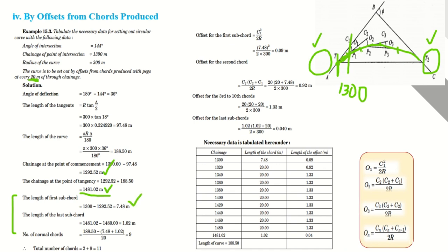Continuing at 20-meter intervals: 1300, 1320, 1340, 1360, 1380, 1400, 1420, 1440, 1460, 1480. The chainage of T2 is 1481.02, which is not a round figure. The last full round peg is at 1480, so our normal chords are complete up to 1480.